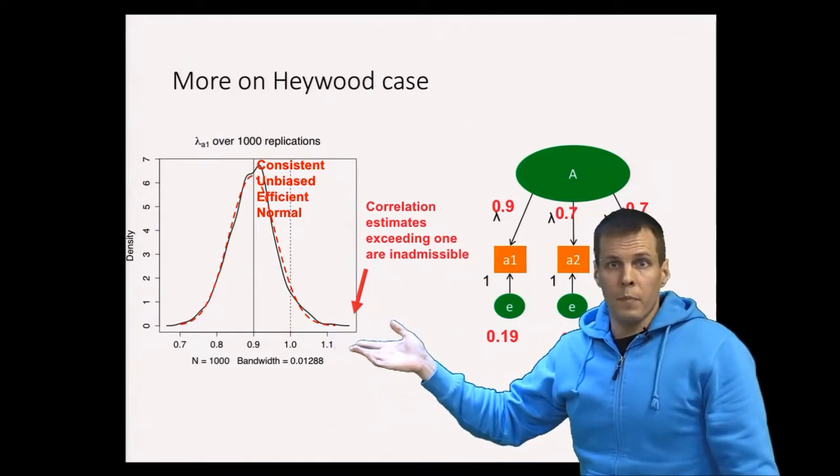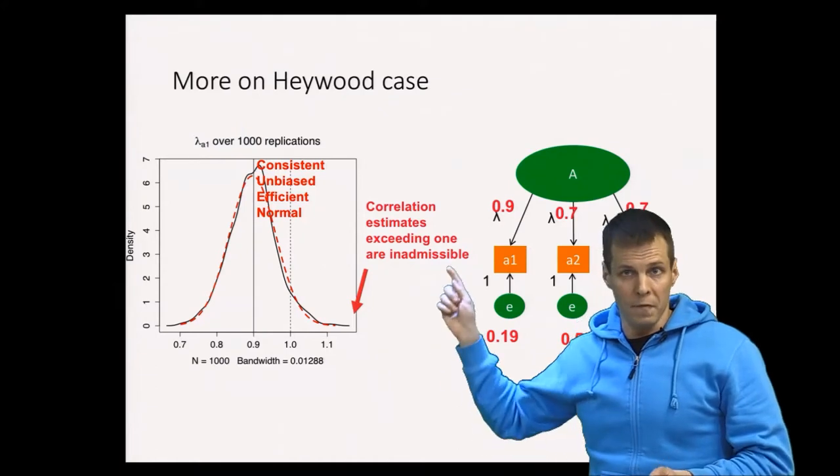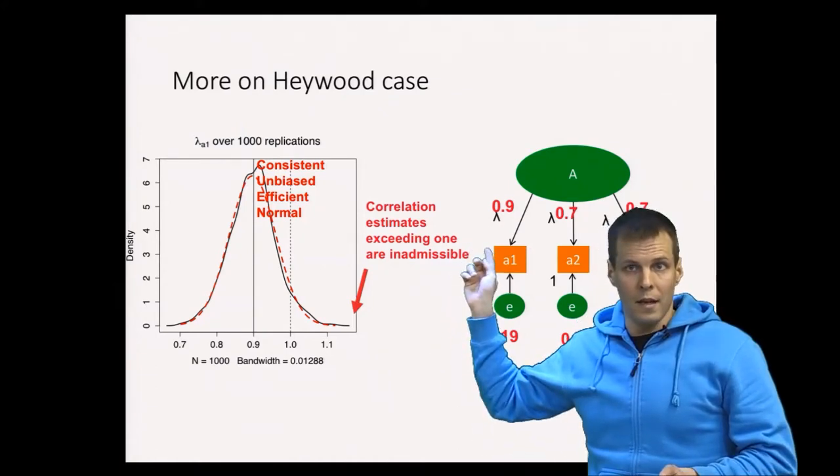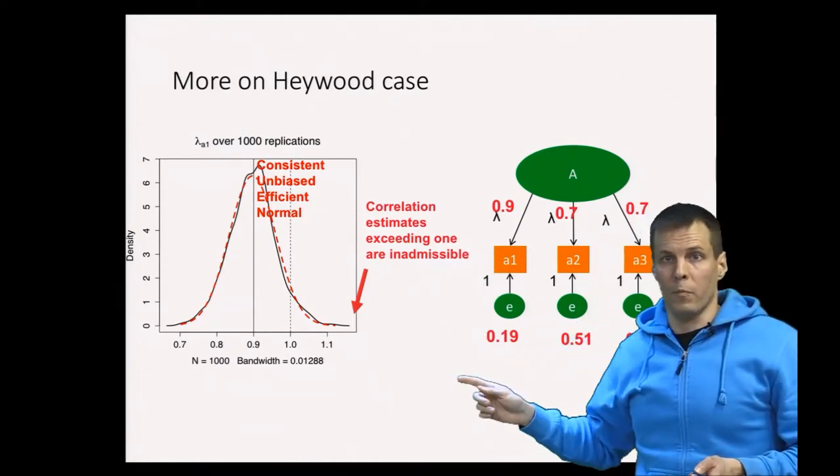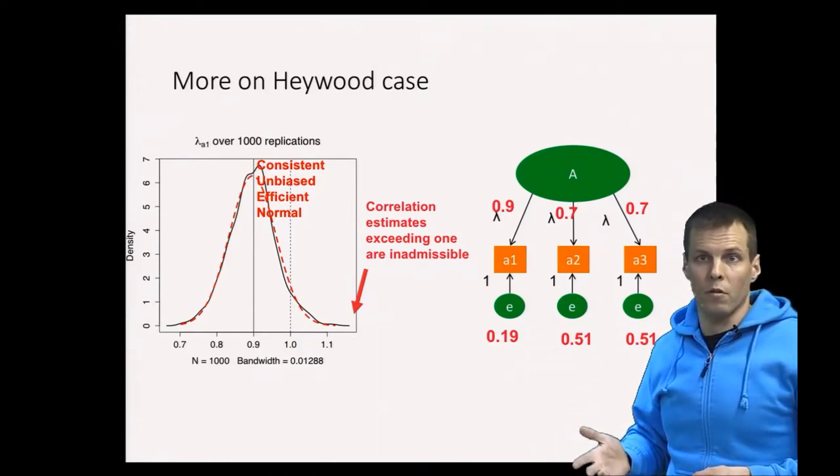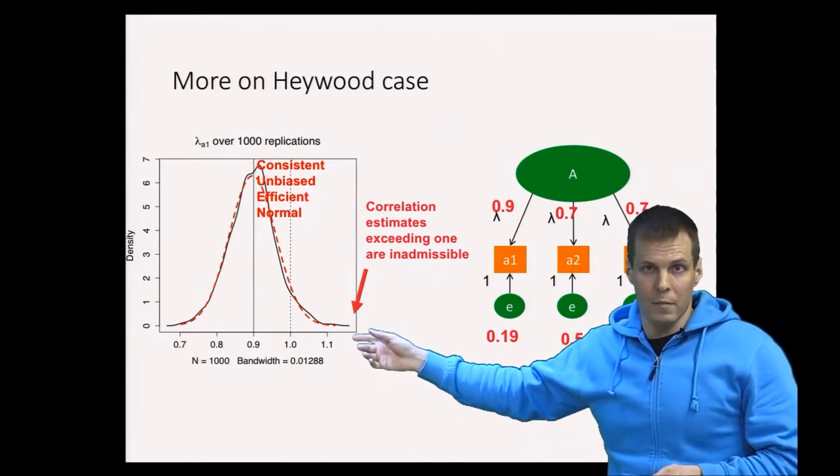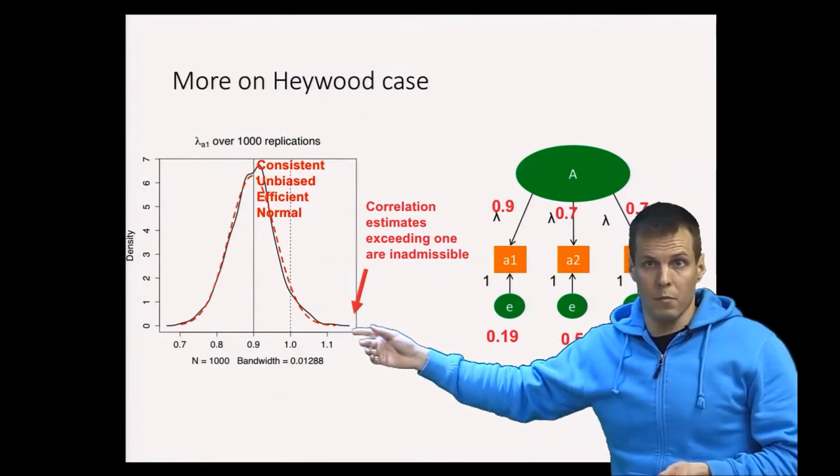So it's possible that if you have a very good estimator and the population value is very large or the population error variance is very small and your sample size is small then because of the normality and unbiasedness of the estimates we will get these inadmissible results.